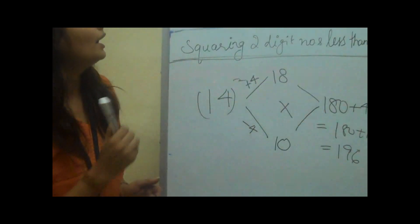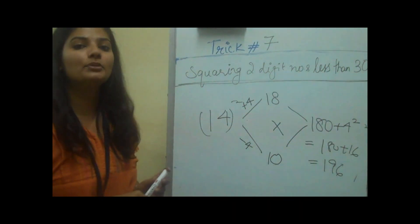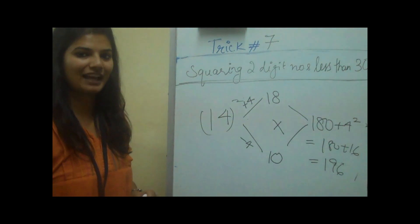So in this manner, you can square two-digit numbers which are less than 30 in a few seconds. Thank you.